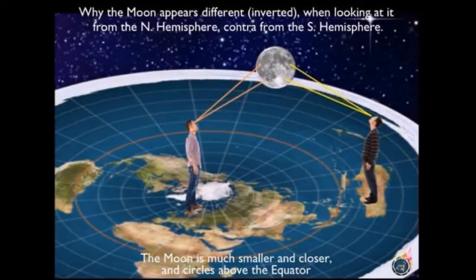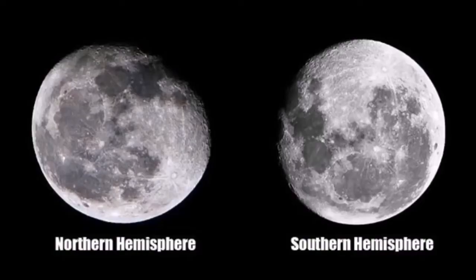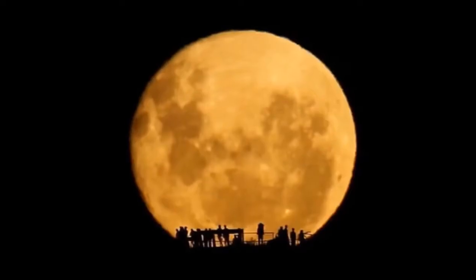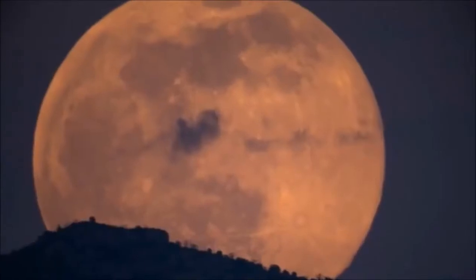The Moon only appears to be upside down because the observer is viewing it from a different angle in the southern part of Earth than the observer in the northern part. They are simply seeing it from an opposite angle. Ancients portrayed the Moon as rotating across the sky, almost like a wheel, and there are some pictures people have taken of this happening.